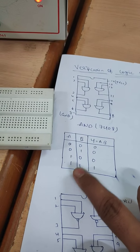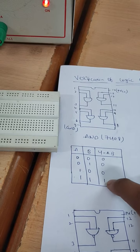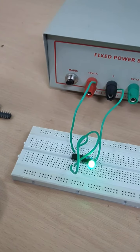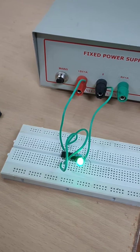The LED will glow. For the condition 1, 1, output will be 1. Verification of AND gate is completed.